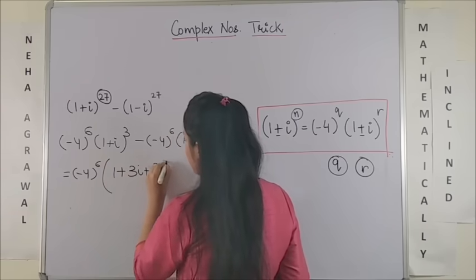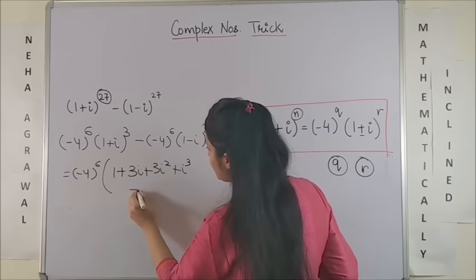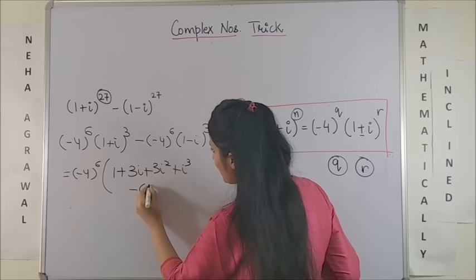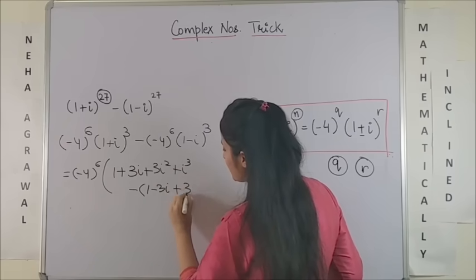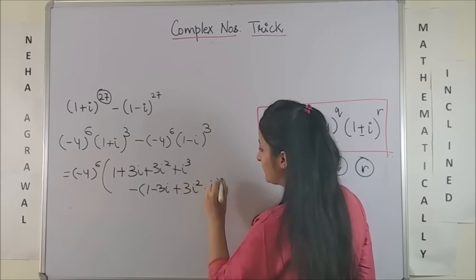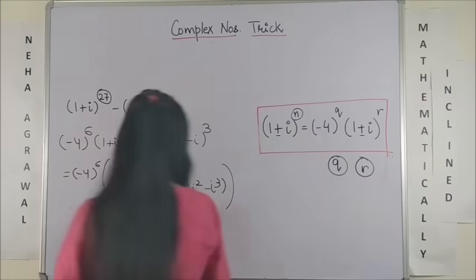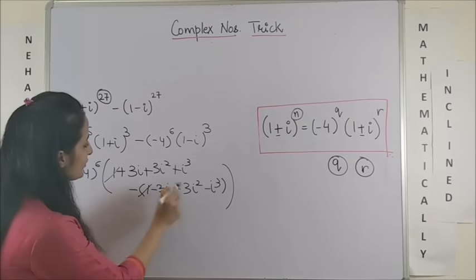Plus iota cube, and from here it's minus, and here you have 1 minus 3 iota plus 3 iota square minus iota cube. And now you would see a lot of things getting cancelled, like ones getting cancelled here, 3 iota square gets cancelled here.